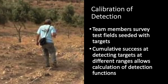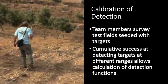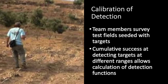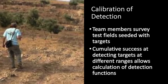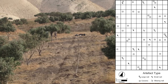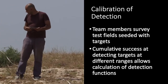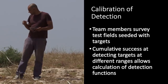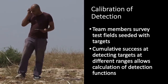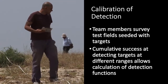For human detectors, the only way to determine these detection functions is by experiment. For example, we can have field walkers walk down the middle of a field seeded with artifacts in known locations to measure their success at detecting them. I'll discuss this process in more detail in another video.